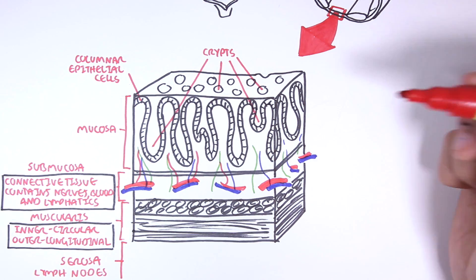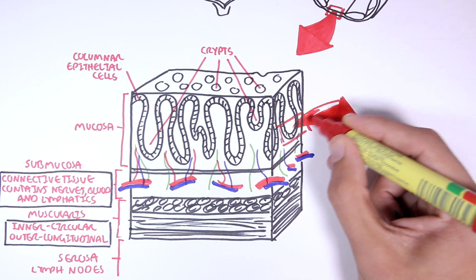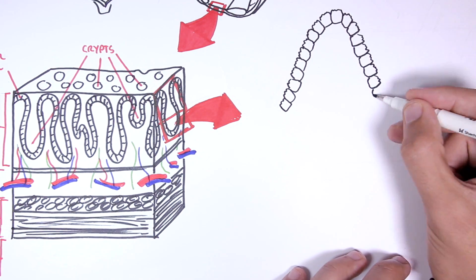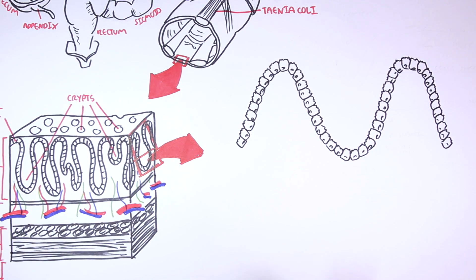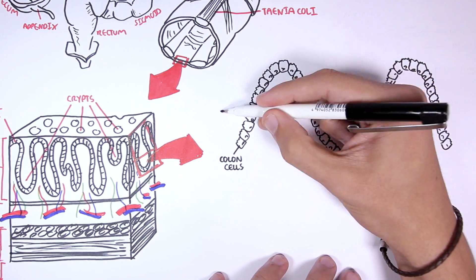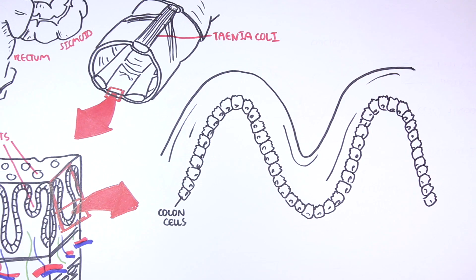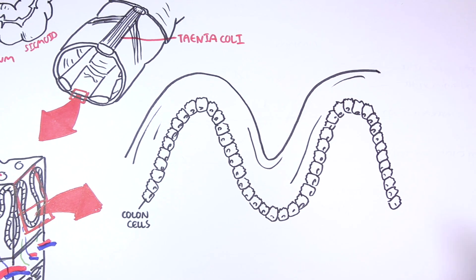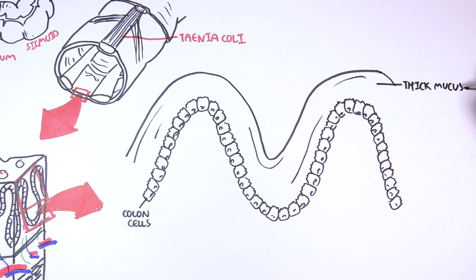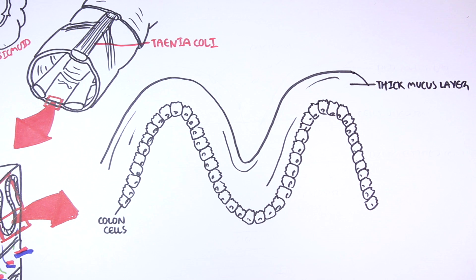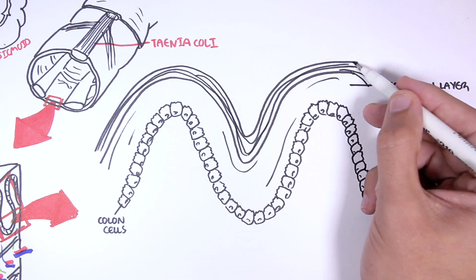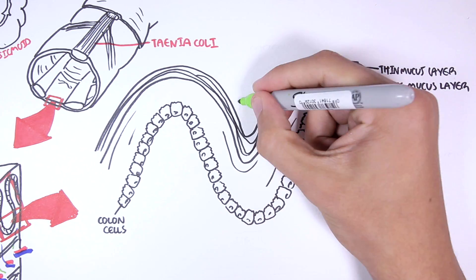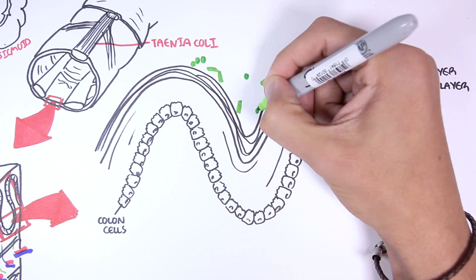Now let's have a closer look at the mucosa layer and at the columnar epithelial cells. Above the colon cells we have mucus, which is a liquid-type substance that helps lubricate food as well as protect the lining of the digestive tract from dangerous microbes and toxic substances. In the colon there is a relatively thick mucus layer and then a thin mucus layer on top of that. Residing above the mucus and within the lumen are bacteria.